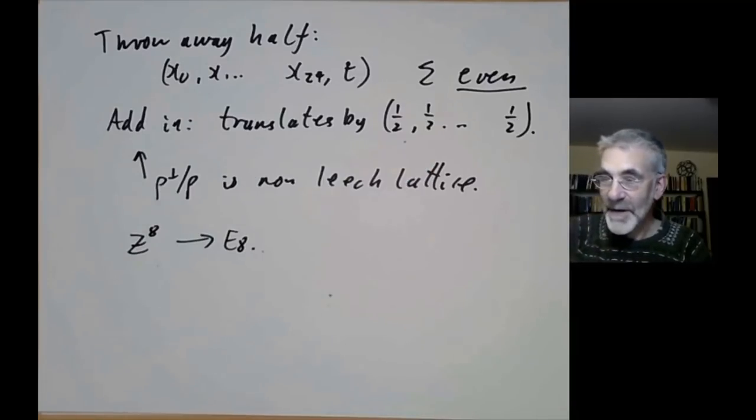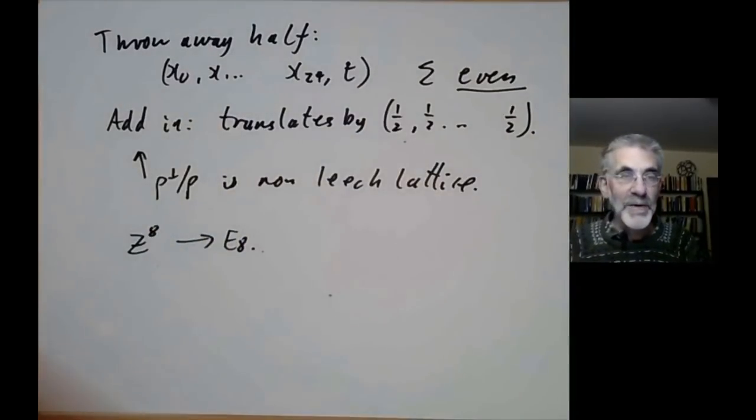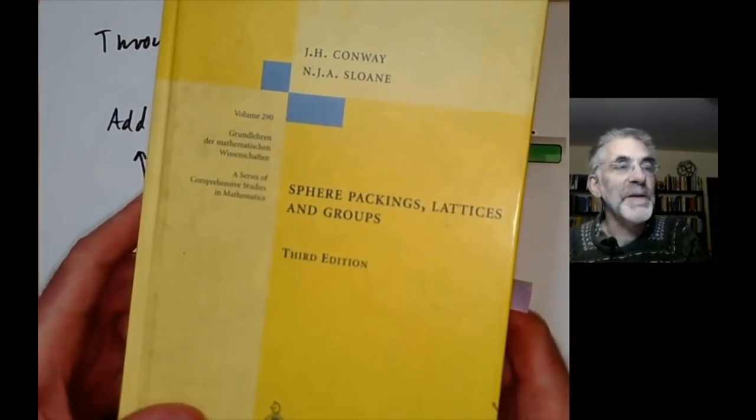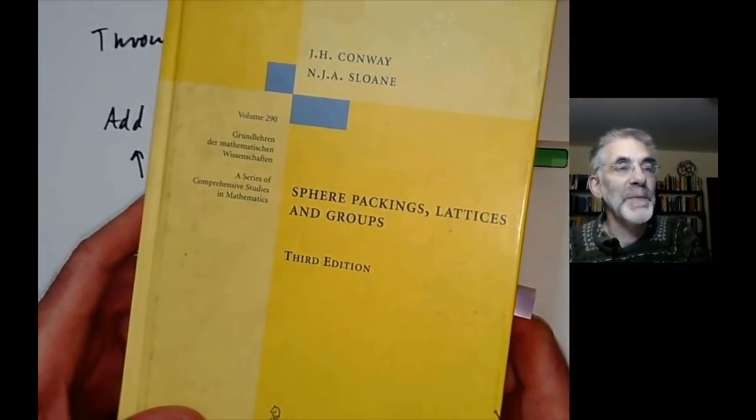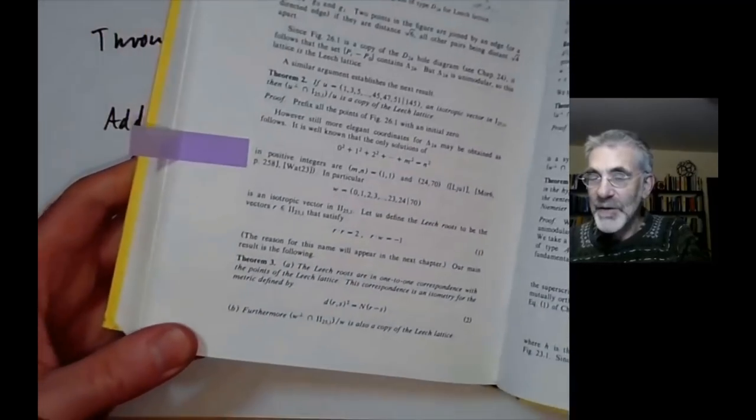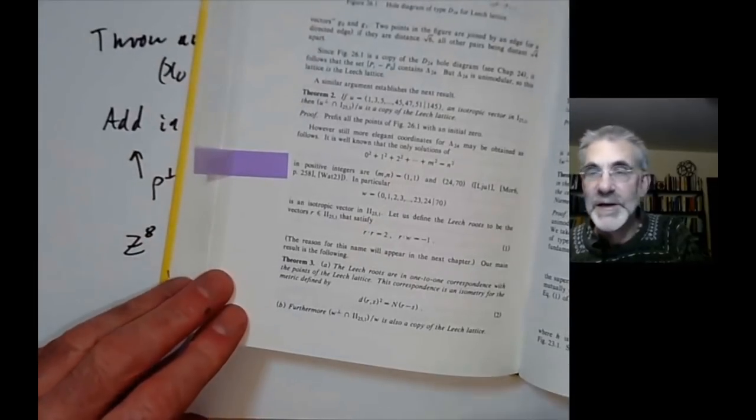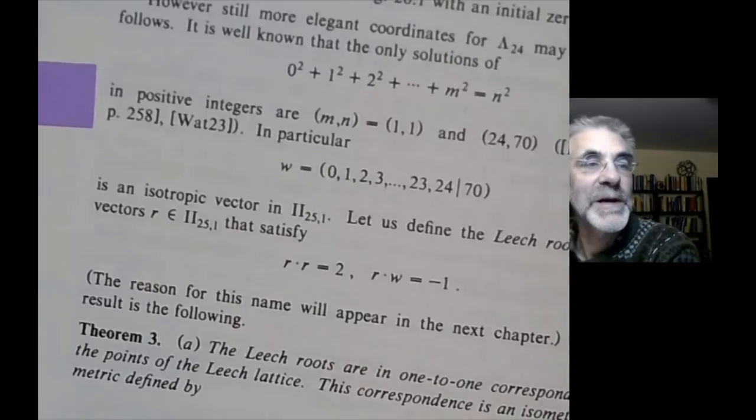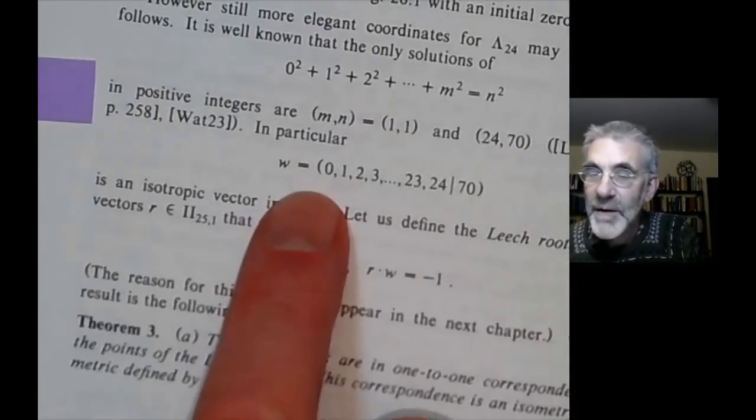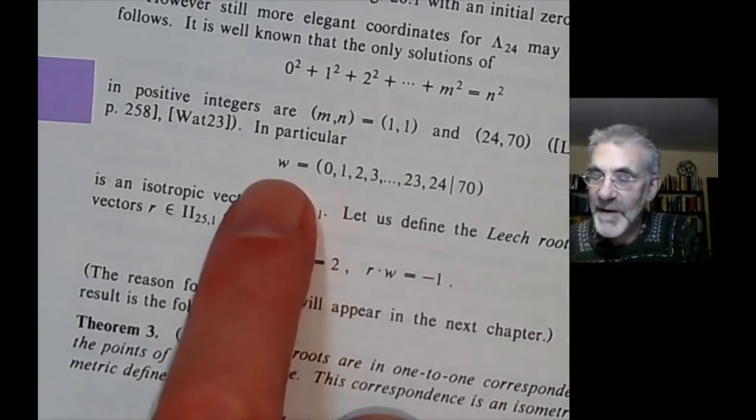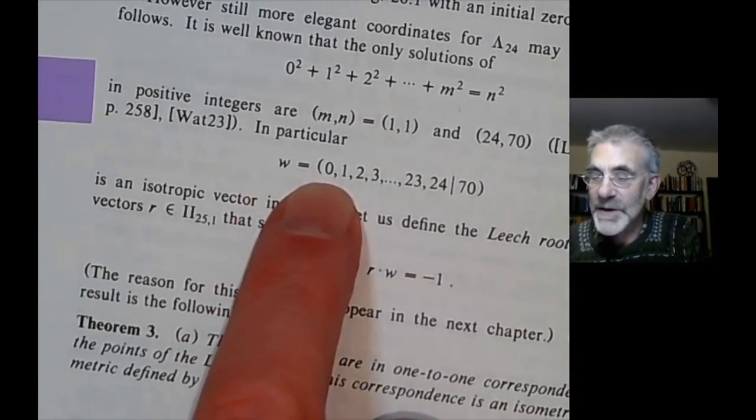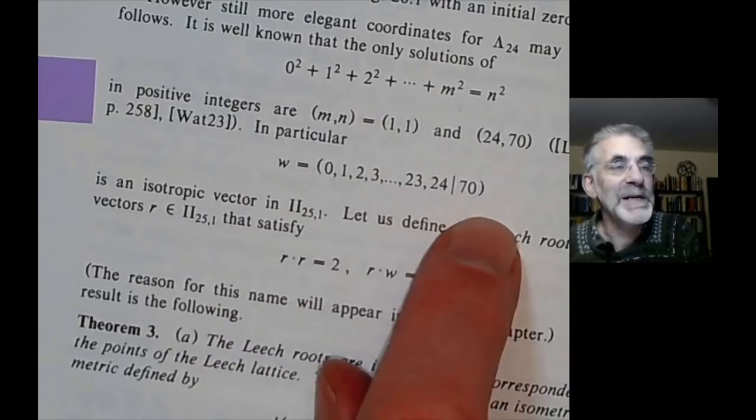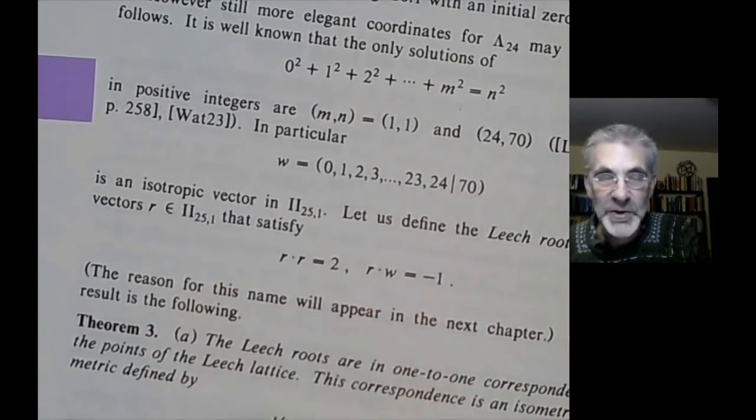Okay if you want to know more about this the best place to find out is the book Sphere Packings Lattices and Groups by Conway and Sloan. And you can find their construction of the Leach lattice in chapter 26. Let me just magnify it a bit for you so you can read it. So here on page 526 we find this vector with coordinate 0 up to 24 followed by 70 which they use to construct the Leach lattice.